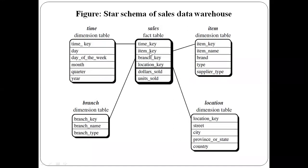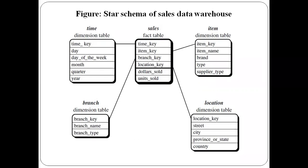Coming to the fact table: it contains the keys of the dimension tables - time key, item key, branch key, and location key - all linked to the respective dimension tables. Apart from the keys, the fact table also contains measures, which are numerical values. Here the measures are dollars sold and units sold.